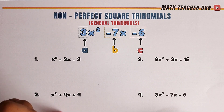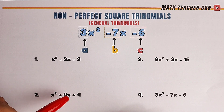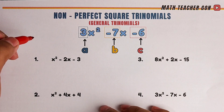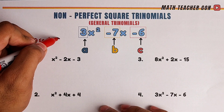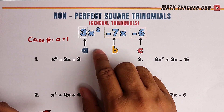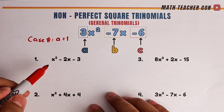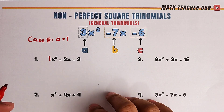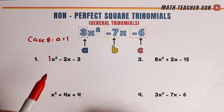Now let's get started. I have prepared two different cases among these four examples. The first and second examples will serve for Case 1, and the third and fourth for Case 2. Case 1 is for trinomials in which the value of a is equal to 1. Remember, a is the coefficient in front of x squared. In example number 1, x squared minus 2x minus 3, the value of a is definitely equal to 1 — an invisible 1. So how are we going to factor a non-perfect square trinomial under Case 1, if the value of a equals 1?